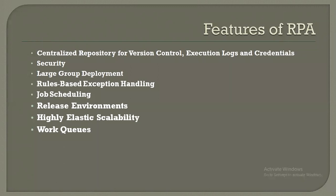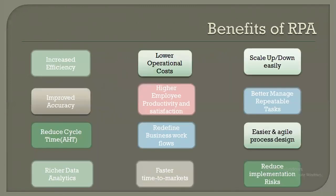The next feature is large group deployment. You can deploy a number of robots in a large group and scale up or down the number of robots based on requirements without downtime. The next is rule-based exception handling — major tools like UiPath and Automation Anywhere have best-in-class features to implement this. Job scheduling is available to schedule jobs. The release environment allows you to deploy packages to development, test, and production environments. Highly elastic scalability lets you scale robots up or down. Work queues allow processing of transactions by multiple robots.